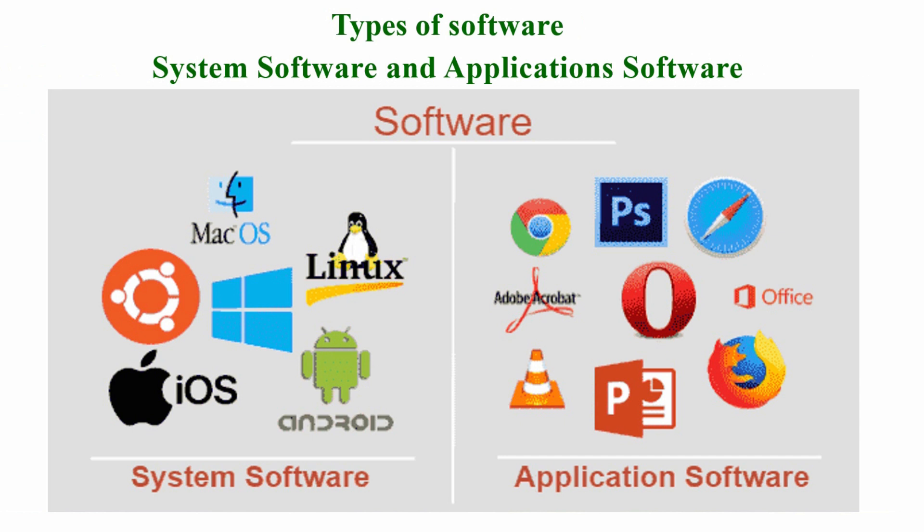We are going to look at types of software. We have system software and we have application software. These are the two major types of software we have.